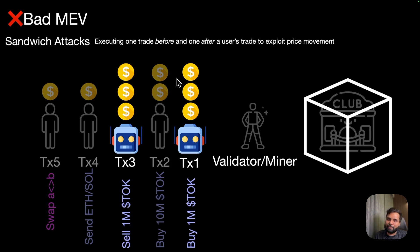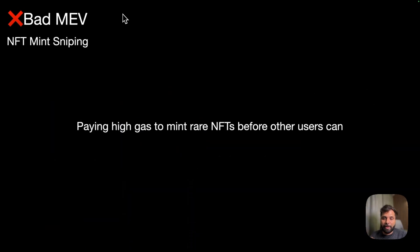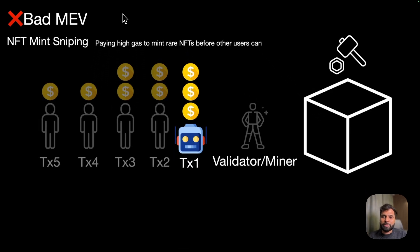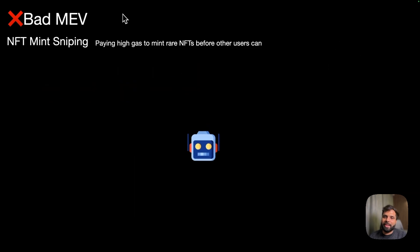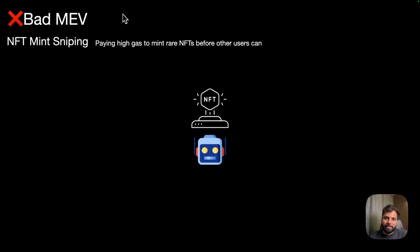Another example is NFT mint sniping, where paying a higher gas fee to mint rare NFTs before any other users. A bot looks for NFT minting transactions and sends a transaction with higher gas fee, front-running the other transactions and buying the NFT before them, thus securing better NFTs before any other users.